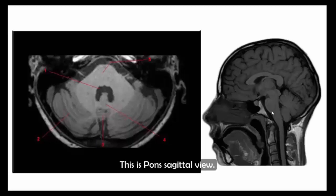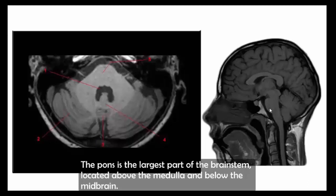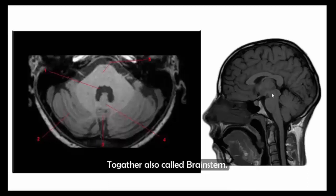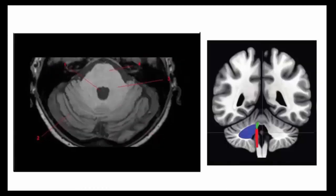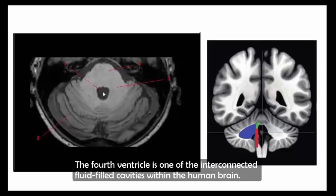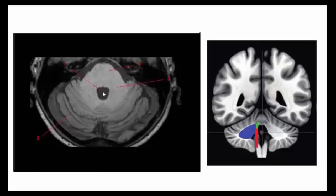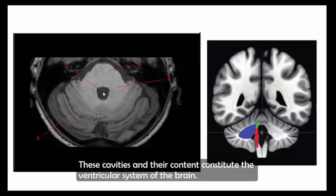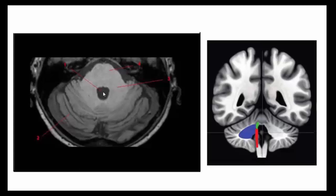This is the pons on axial view and sagittal view. The pons is the largest part of the brainstem, located above the medulla and below the midbrain. Together they are also called the brainstem. The fourth ventricle is one of the interconnected fluid-filled cavities within the human brain; these cavities constitute the ventricular system of the brain.